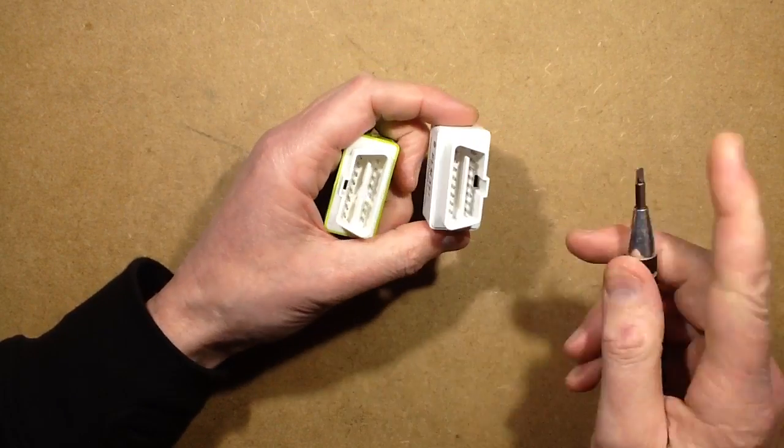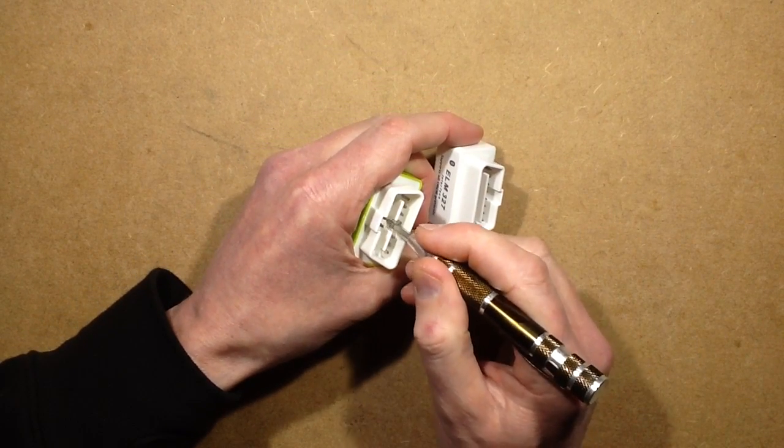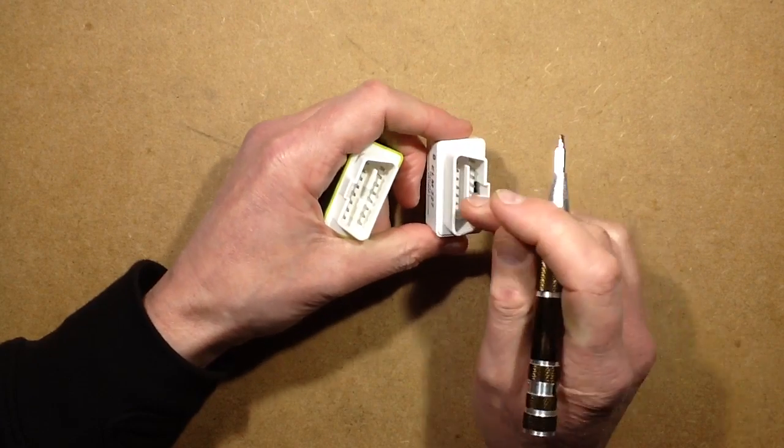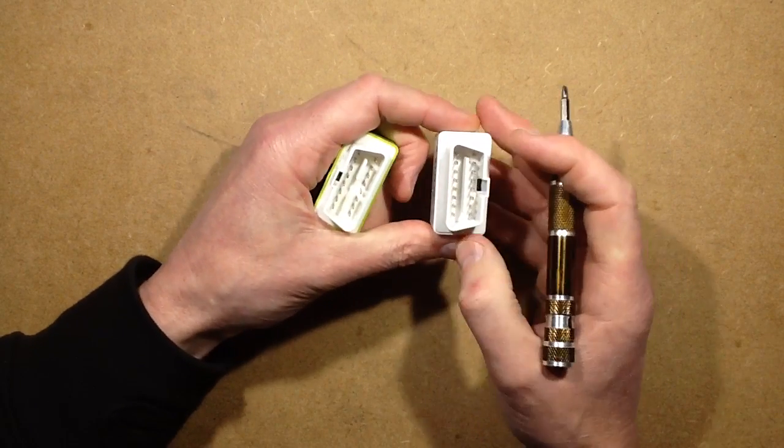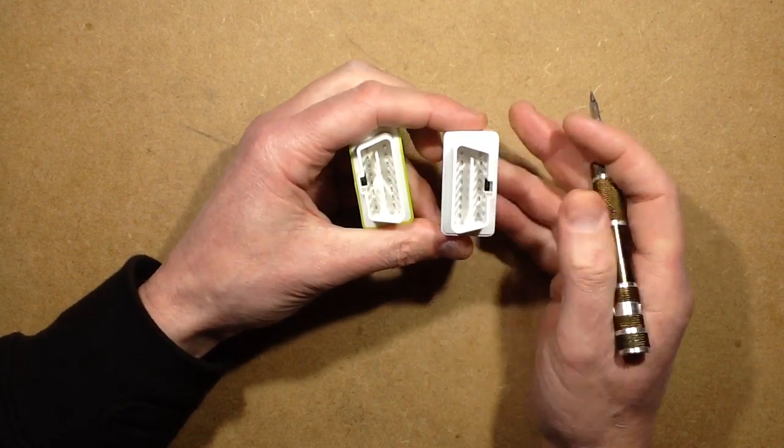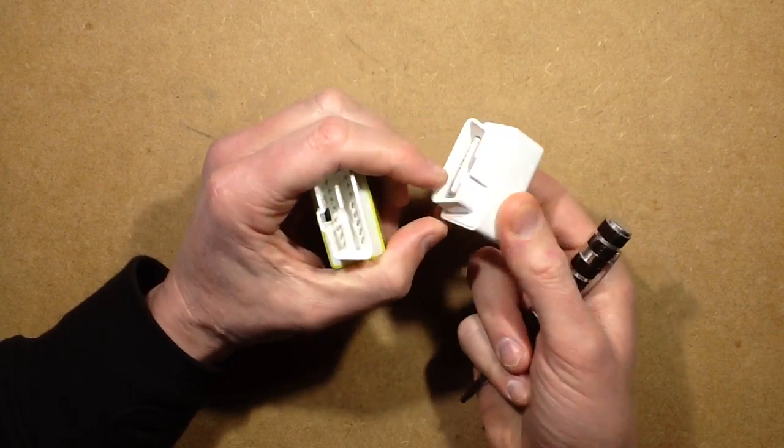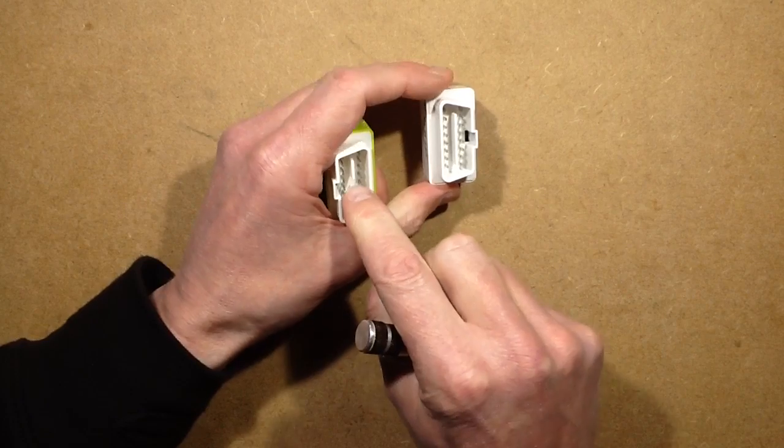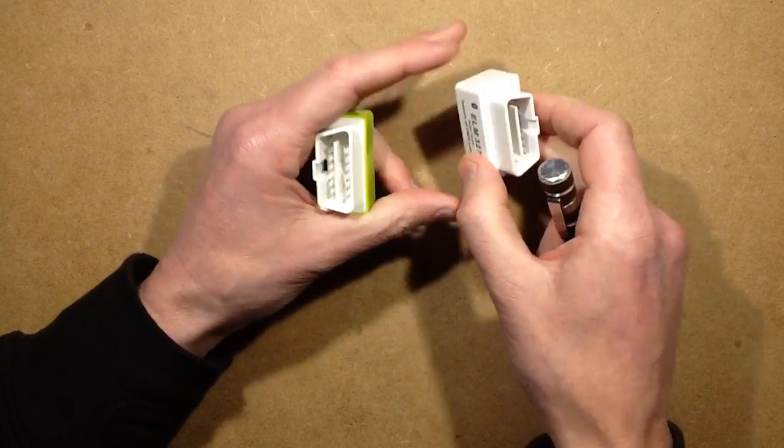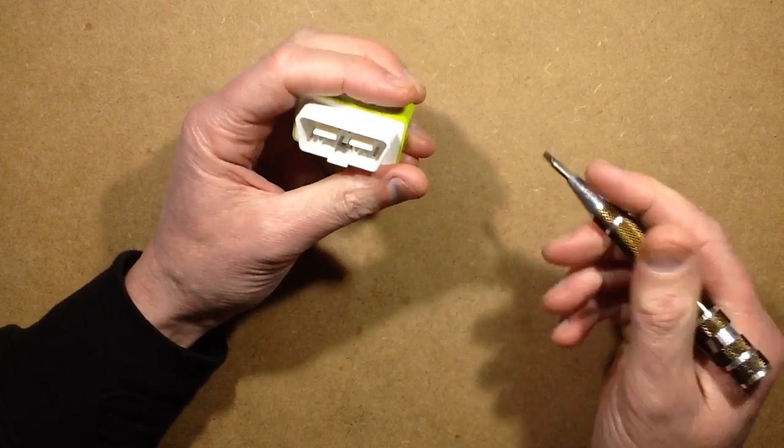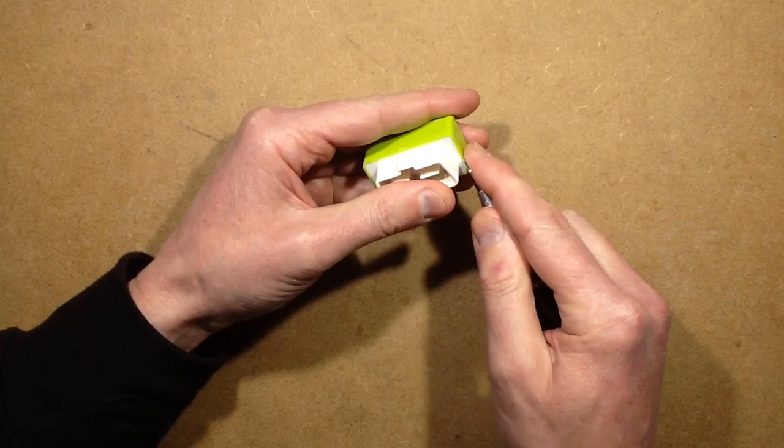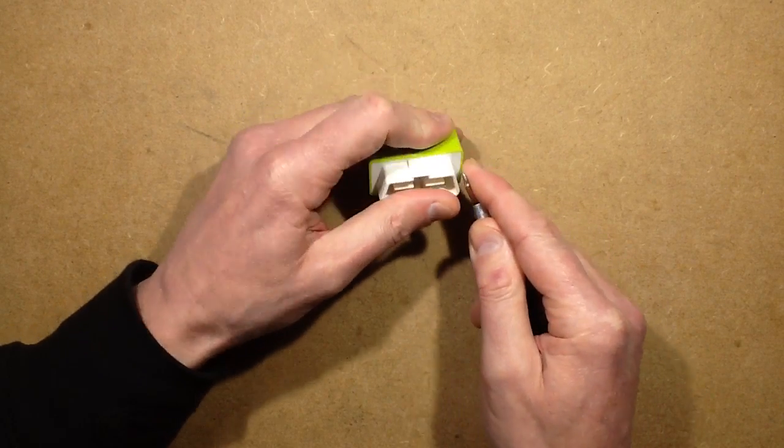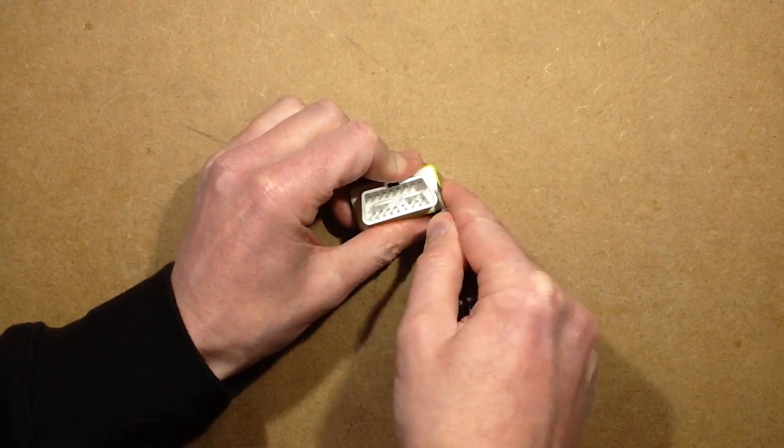It's also interesting to note that this one has the little notch missing out here. There are two versions of the OBD2 - one is designed for 24 volt systems, so this is a 12 volt one. You will not be able to put it into say a lorry's OBD2 port. This one appears to accommodate that as well. I'm going to try to get this open.